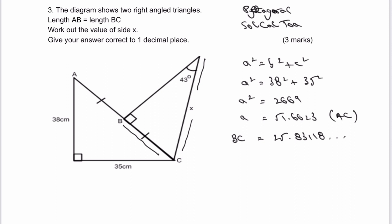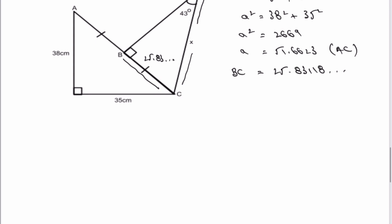What we're going to do then is use this length of BC, which is 25.83 and so on, as part of the equation for SOHCAHTOA.